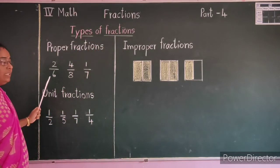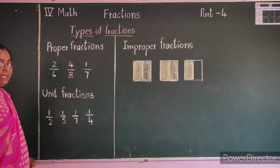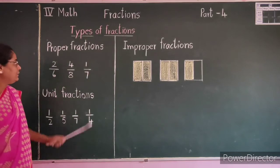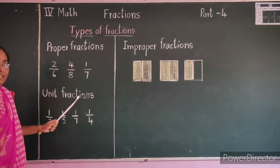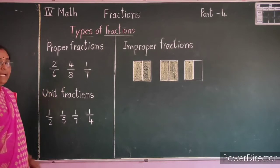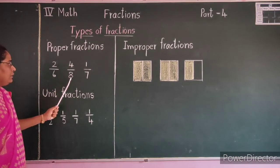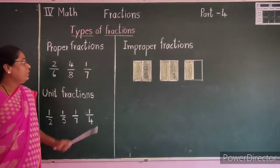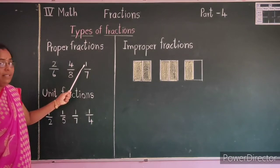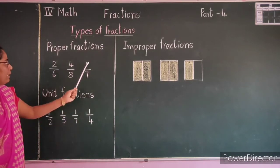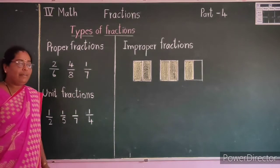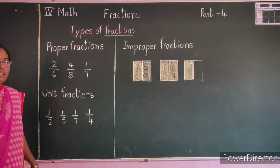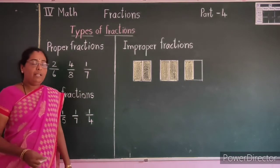For example, 2 by 6 — here 2 is the numerator and 6 is the denominator, and 2 is smaller than 6. Another example: 4 by 8 — 4 is smaller than 8, numerator is smaller than denominator. One more example: 1 by 7 — here numerator is 1, denominator is 7, and 1 is smaller than 7, so numerator is smaller than denominator. These fractions are called proper fractions.